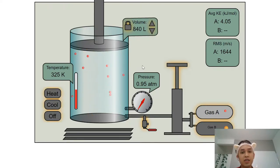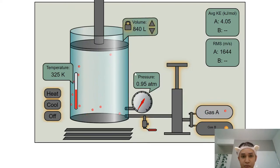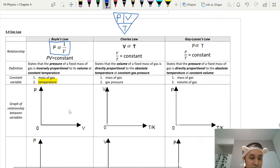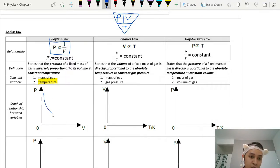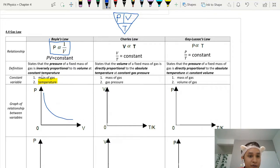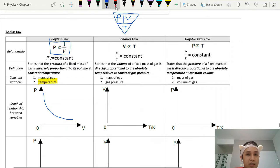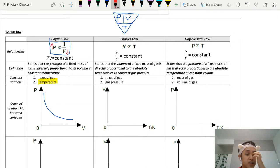This is Boyle's Law — when volume decreases, pressure increases. As volume increases, pressure slowly decreases. The definition states that pressure is inversely proportional to volume when temperature is constant, meaning when volume decreases, pressure will increase. This is the effect of volume and air pressure under Boyle's Law.